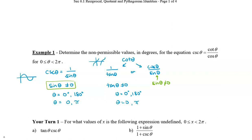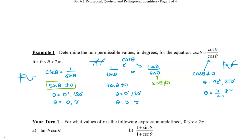Lastly, looking at the denominator, cosine theta cannot equal 0. From the cosine graph, this occurs at 90 degrees and 270 degrees, or pi over 2 and 3 pi over 2. So in total, the non-permissible values are 0, 90, 180, and 270 degrees — or 0, pi over 2, pi, and 3 pi over 2.